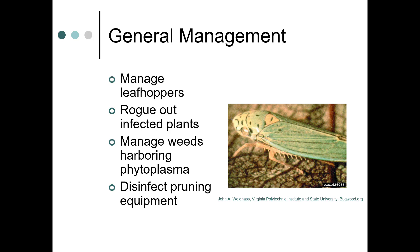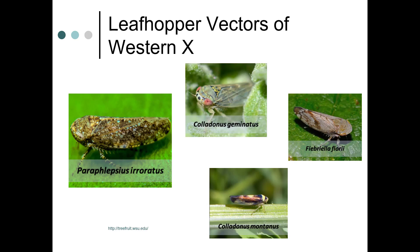It's important to manage leafhoppers, though it's not an easy thing to do. You want to rogue out infected plants and manage weeds that may be harboring phytoplasma — dandelions can actually harbor phytoplasma. You want to disinfect your pruning equipment. These pictures show leafhopper vectors of Western X, which affects cherries, peaches, and some other rose family fruits. There's a real variety in what they look like, but they are all transmitters of this phytoplasma.